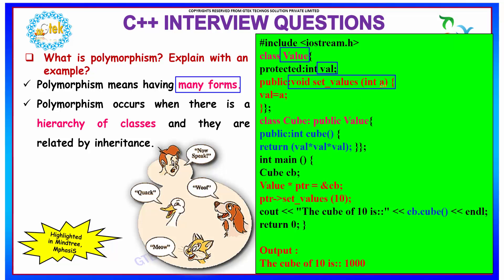It will set the value of A to be val. And your derived class is cube and it is derived from the base class value.